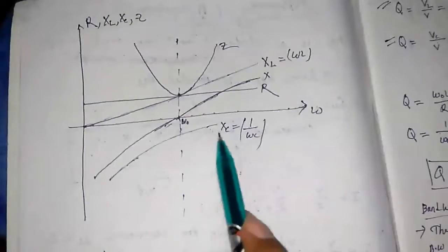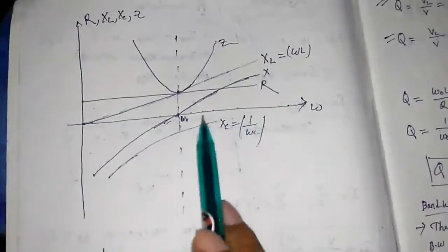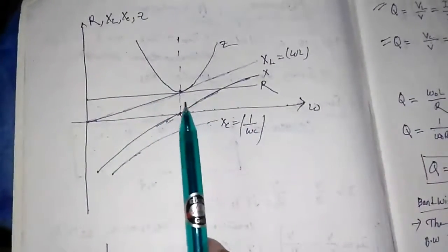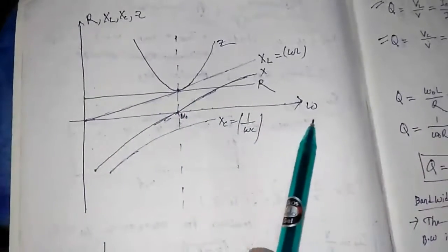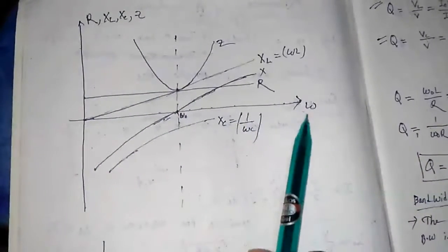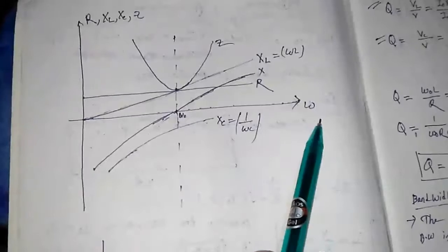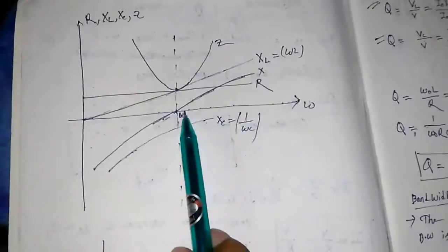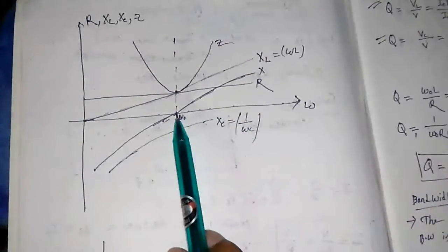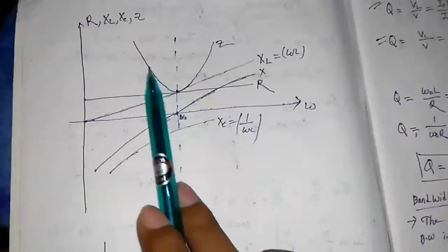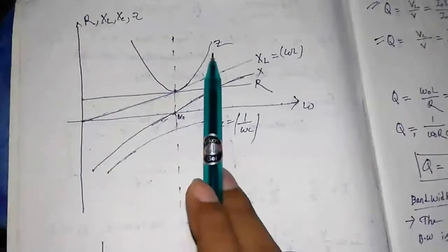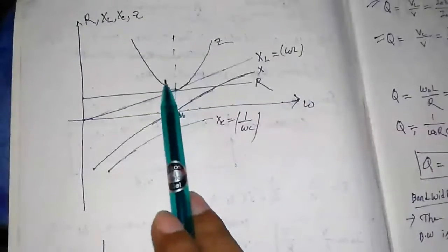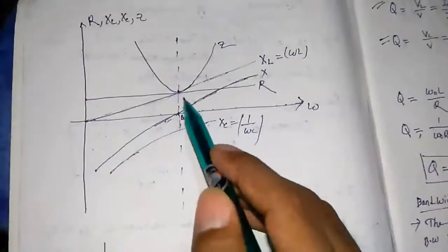In this graph, you can analyze all the parameters with respect to omega. Omega is the angular frequency, 2πF. So at resonance frequency, the impedance is minimum.